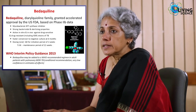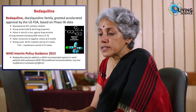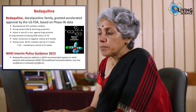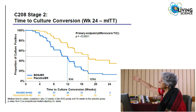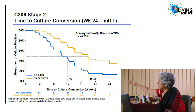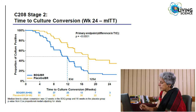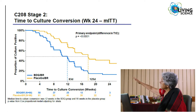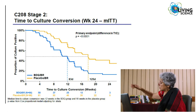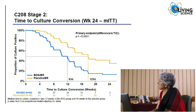Bedaquiline, which targets mycobacterial ATP synthase, showed good properties but also some cardiac toxicity in early studies, so uptake has been cautious. Compared to placebo, adding bedaquiline makes sputum negative much faster in drug-resistant TB patients — approximately 60 percent versus 40 percent outcomes at two years. It has been introduced in India in six states and will be expanded soon. Delamanid similarly showed 29 percent versus 45 percent response when added to standard MDR-TB treatment.